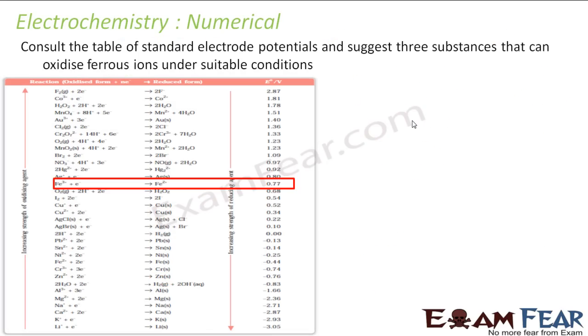The next question is: consult the table of standard electrode potentials and suggest three substances that can oxidize ferrous ions under suitable conditions. So something that can oxidize ferrous ions, first let's mark this in red, right? The ferrous ions, this guy: ferric to ferrous. Which can oxidize ferrous to ferric? That means something that can oxidize ferrous ions, that substance will be able to reduce.